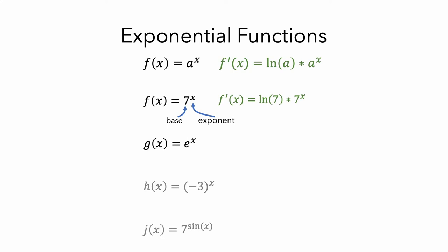For g of x equals e to the x, the base is e, which represents a number, and the exponent is just x, so we can use the rule. The derivative would be the natural log of the base times the original f of x. And you might remember that the natural log of e is just 1, so in this case the derivative of g of x is just e to the x.